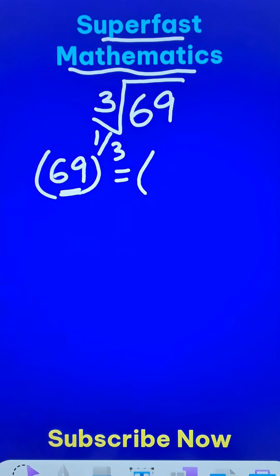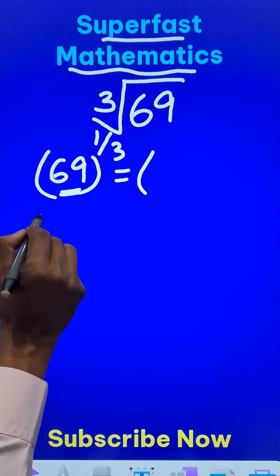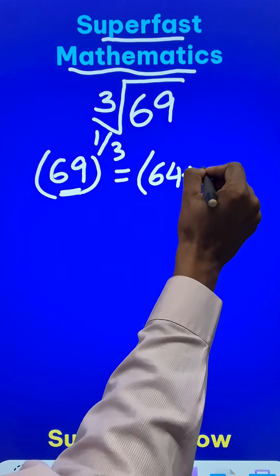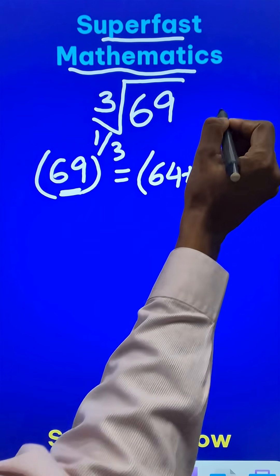We write it as, I need a number below 69 which is a perfect cube. So I know 4 cube is 64, so I will write 64 plus 5 and power 1 by 3.